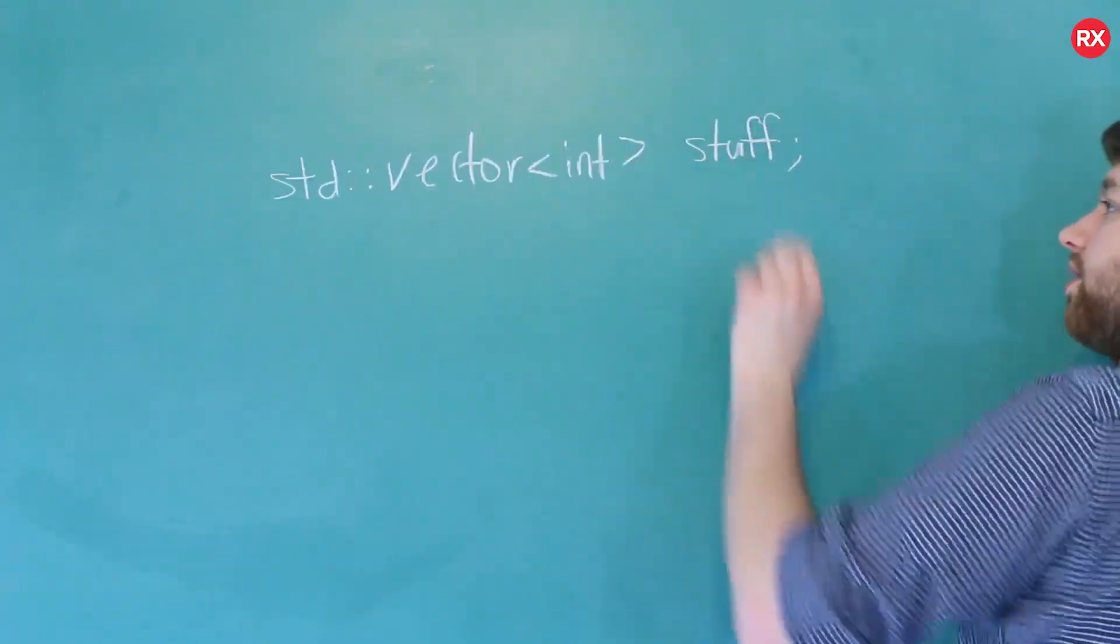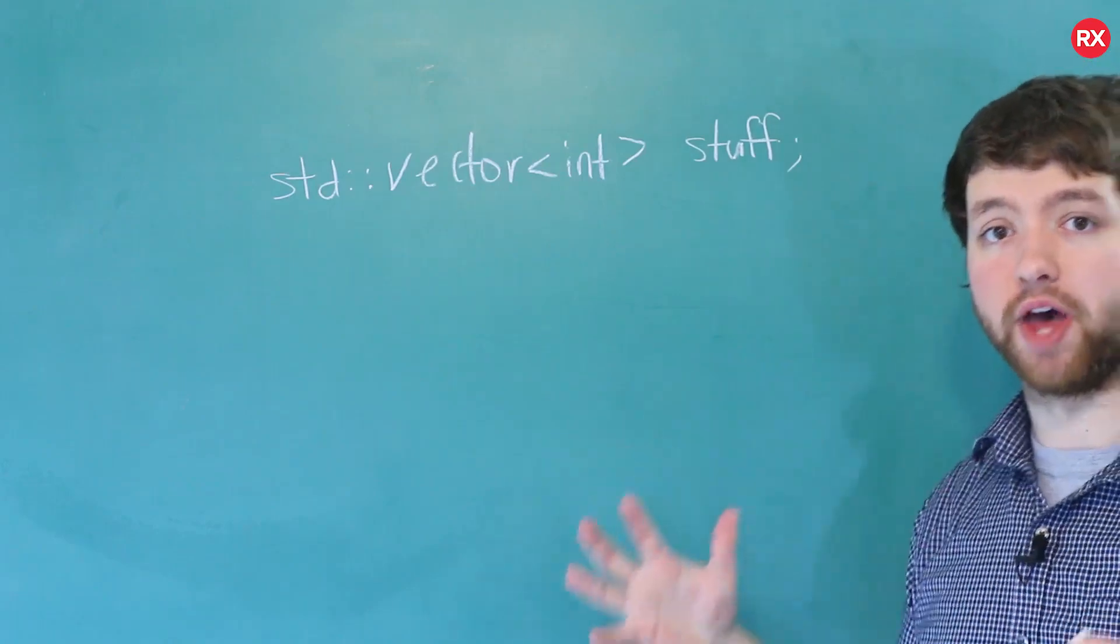So up front, one of the big differences between arrays, templatized arrays, and vectors is whether or not you can assign one of them to another variable of the same type. So for example, let's say we create a vector. We call this stuff. And then let's say you assign some values to it. You can do that.